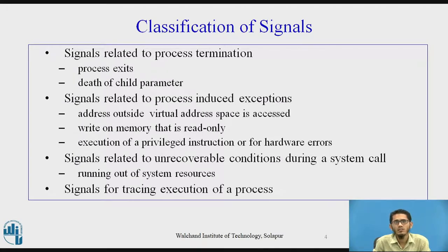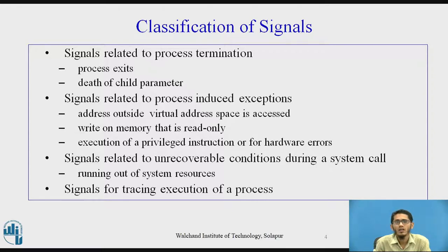The first category is signals related to process termination — such as signals sent when a process exits or a signal sent with the death of child parameter. The next category is signals related to process-induced exceptions, like a process trying to access an address outside its virtual address space, or trying to write to read-only memory, or execution of a privileged instruction, or hardware errors.